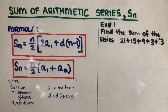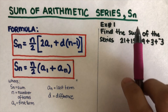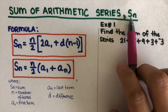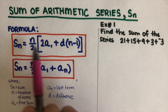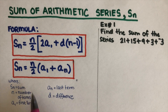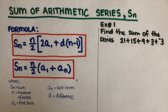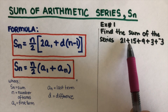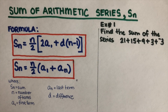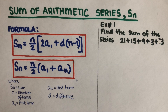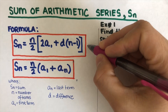Hello everyone, today we will be determining or calculating the sum of an arithmetic series, represented as S of n. These are the two formulas shown here with their descriptions below. Let's jump into the first example: find the sum of this series — 21 plus 15 plus 9 plus 3 plus negative 3. We're going to use each of these equations, and whichever you use, the answer is the same.